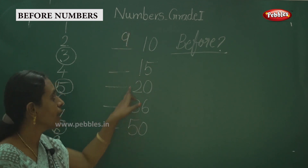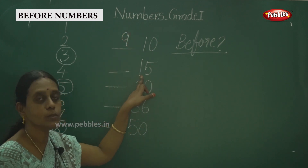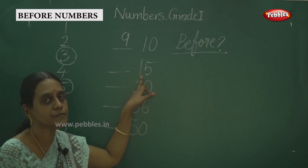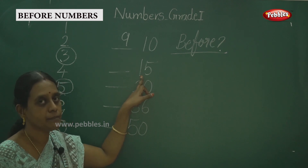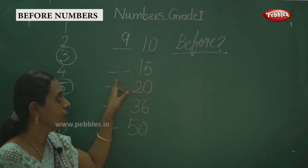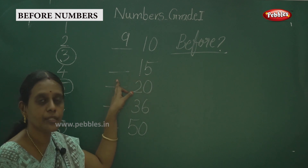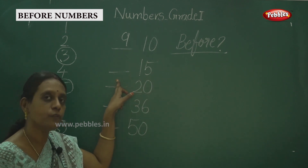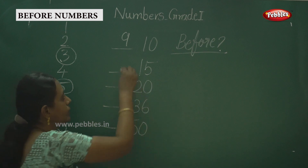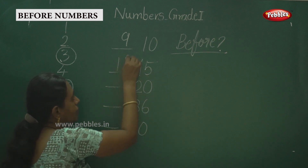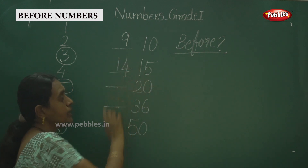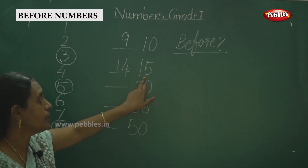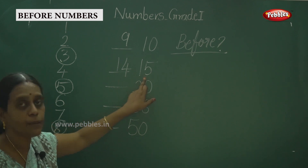The number before 15 is 14. In the manner of numbers, while you are doing this kind of number, the method is the same. The number is 15, so what do you do? You go one number back. The answer is 14.